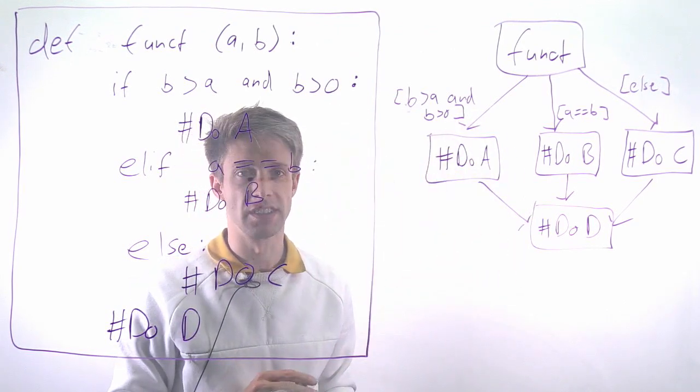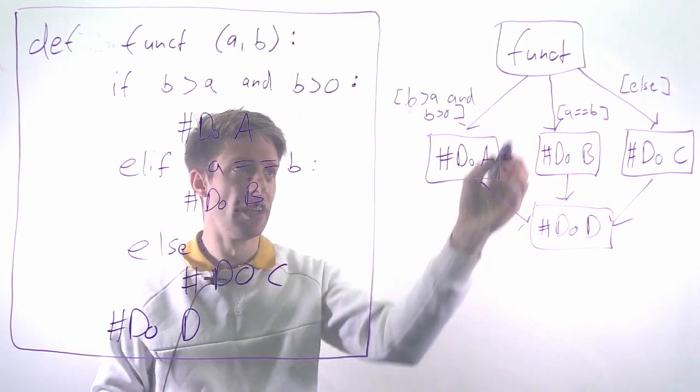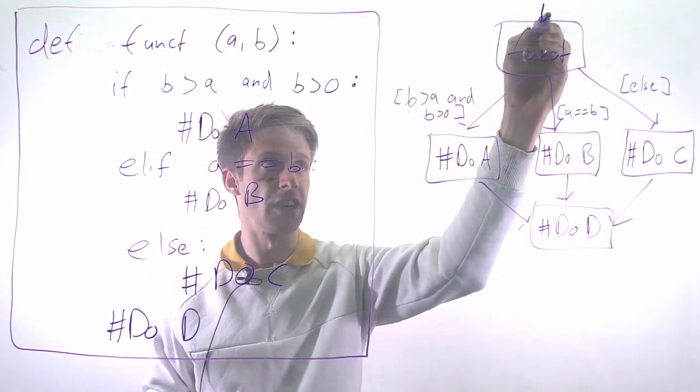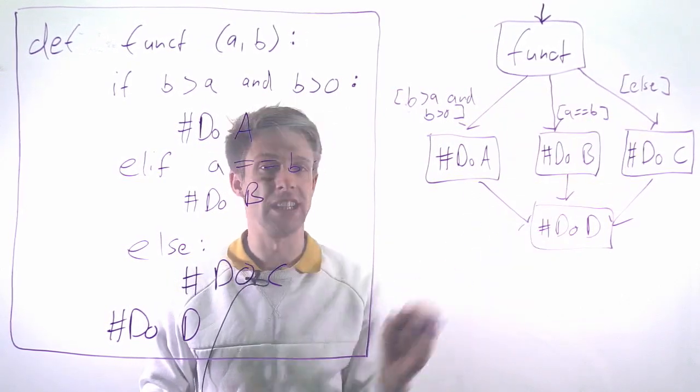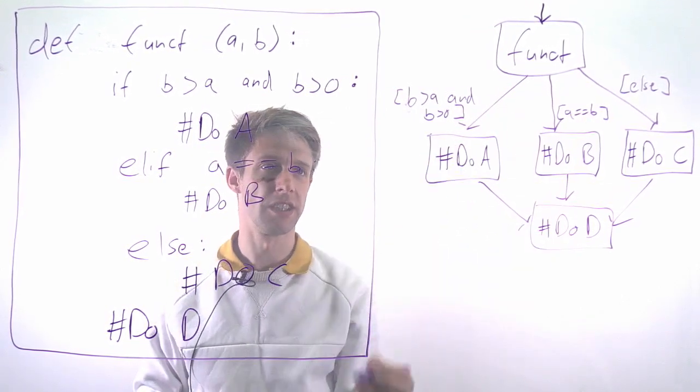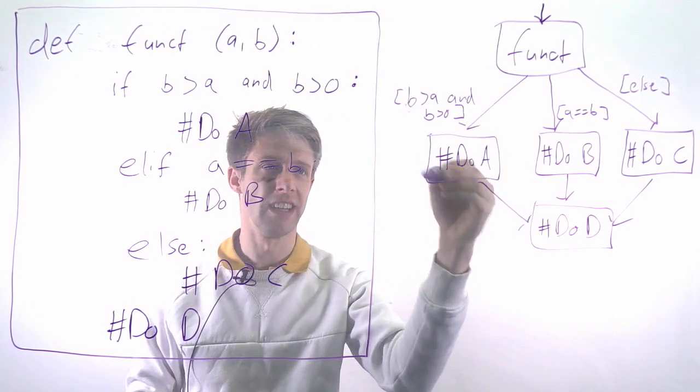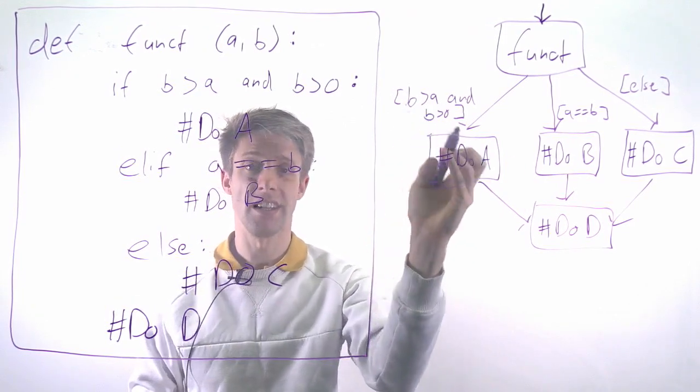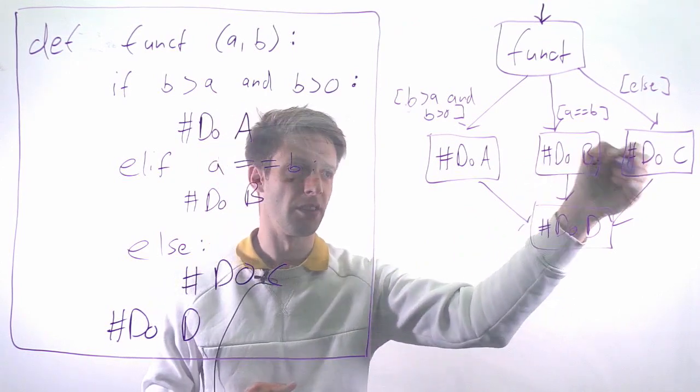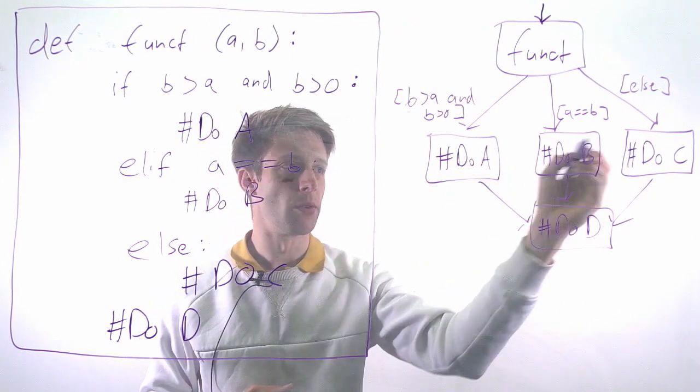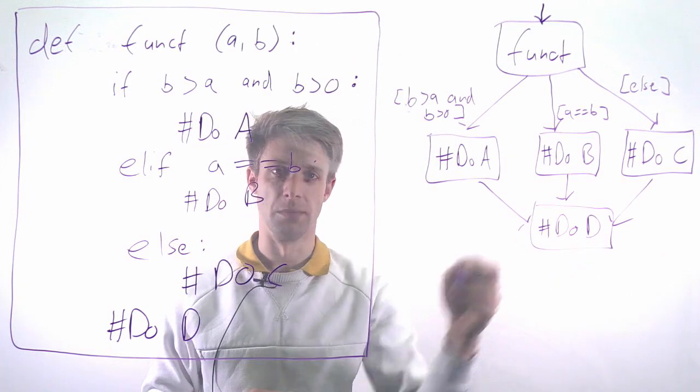We can represent this as a sort of diagram of how the different conditions are evaluated. If this is our entry point, this is our function, then we can go through to three different places in the code depending on the conditions. Our first part A is executed if b is larger than a and b is larger than 0. If a equals b, we're in the middle. Otherwise, we're on the right side. No matter what happens, we'll end up in the bottom and do D.